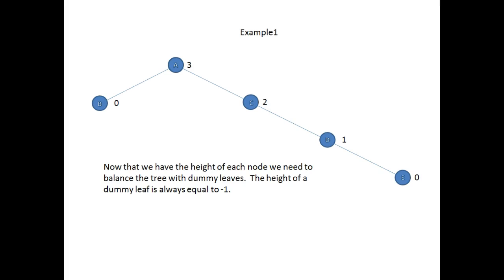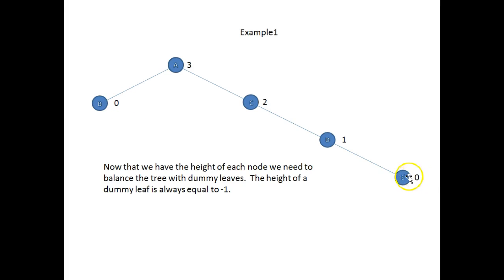Here we have the heights of each of the nodes. The height of the base of the tree is zero, so B has a height of zero and E has a height of zero, going up to three.